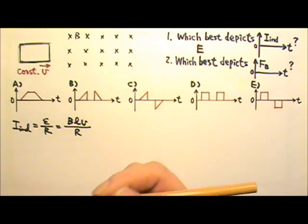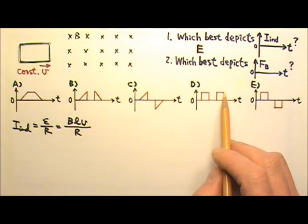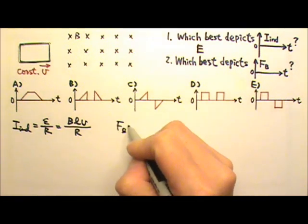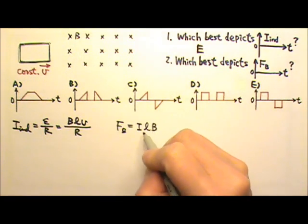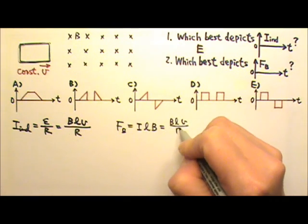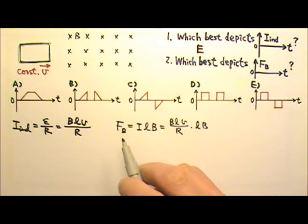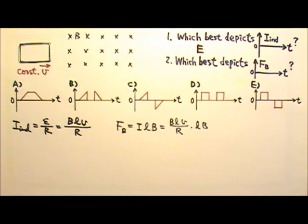The magnetic resistant force is leftward both when the loop is entering and when it is exiting, and the force is constant — not increasing. This is because the magnetic resistant force is caused by the induced current being inside the magnetic field, and the current is BLV over R. Every single term is a constant, so the magnetic force is constant while entering and while exiting. The answer is D for number two.